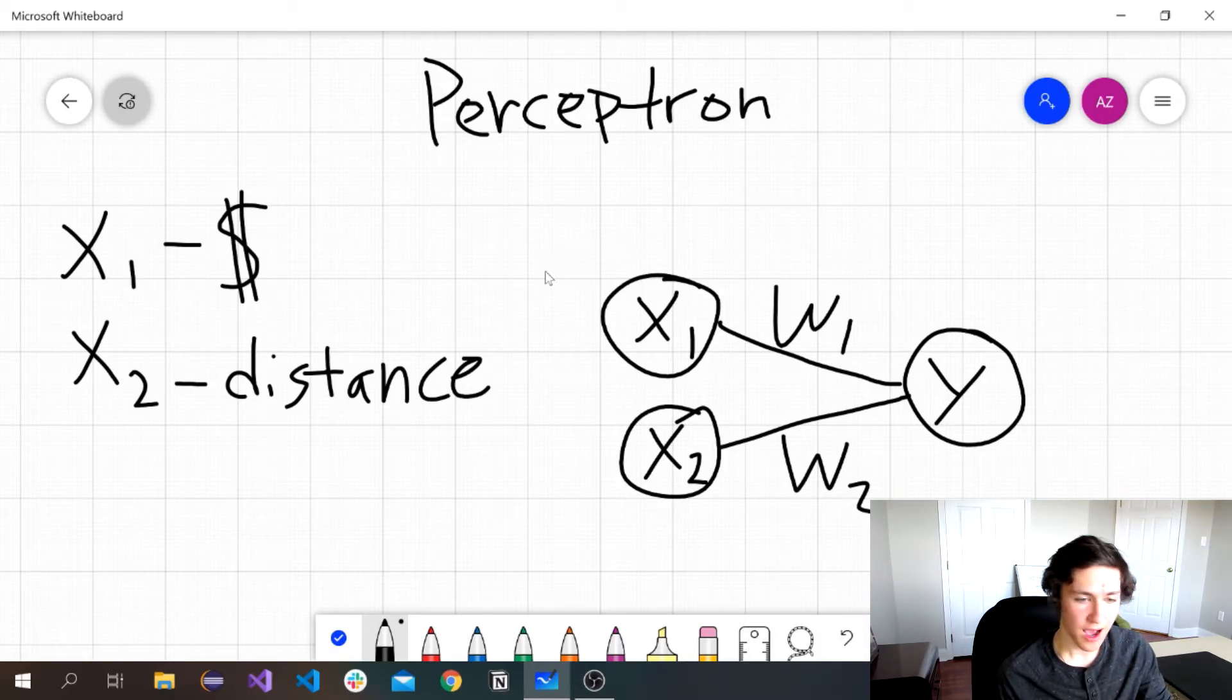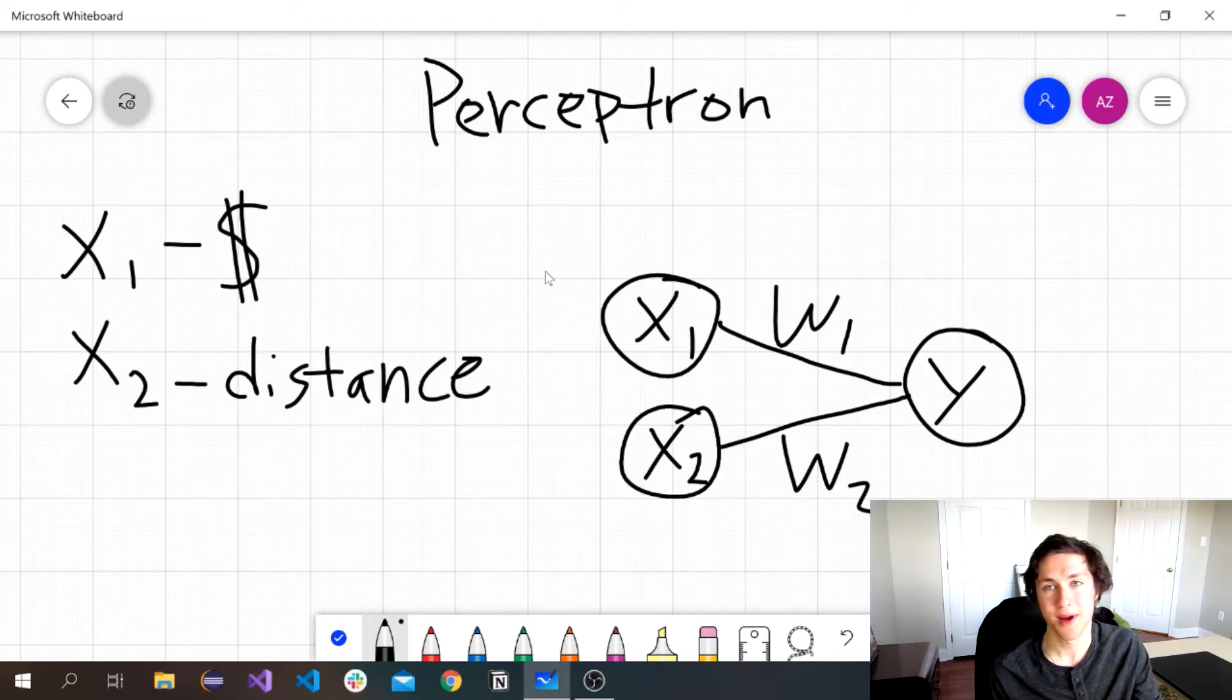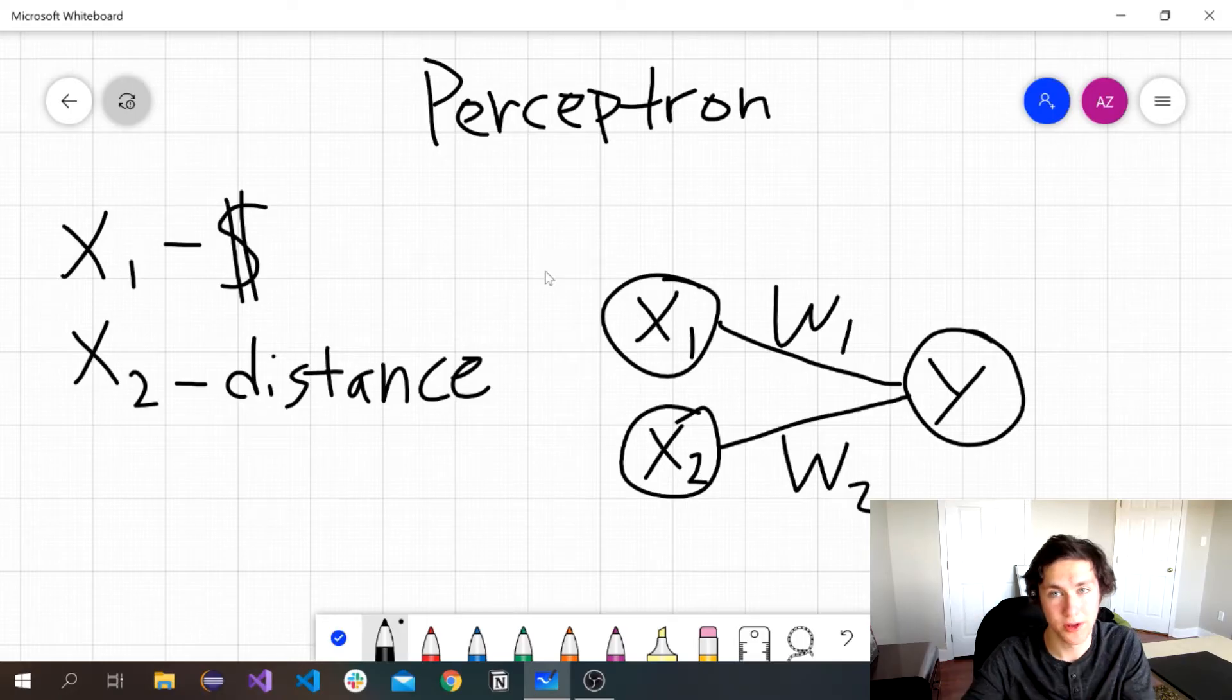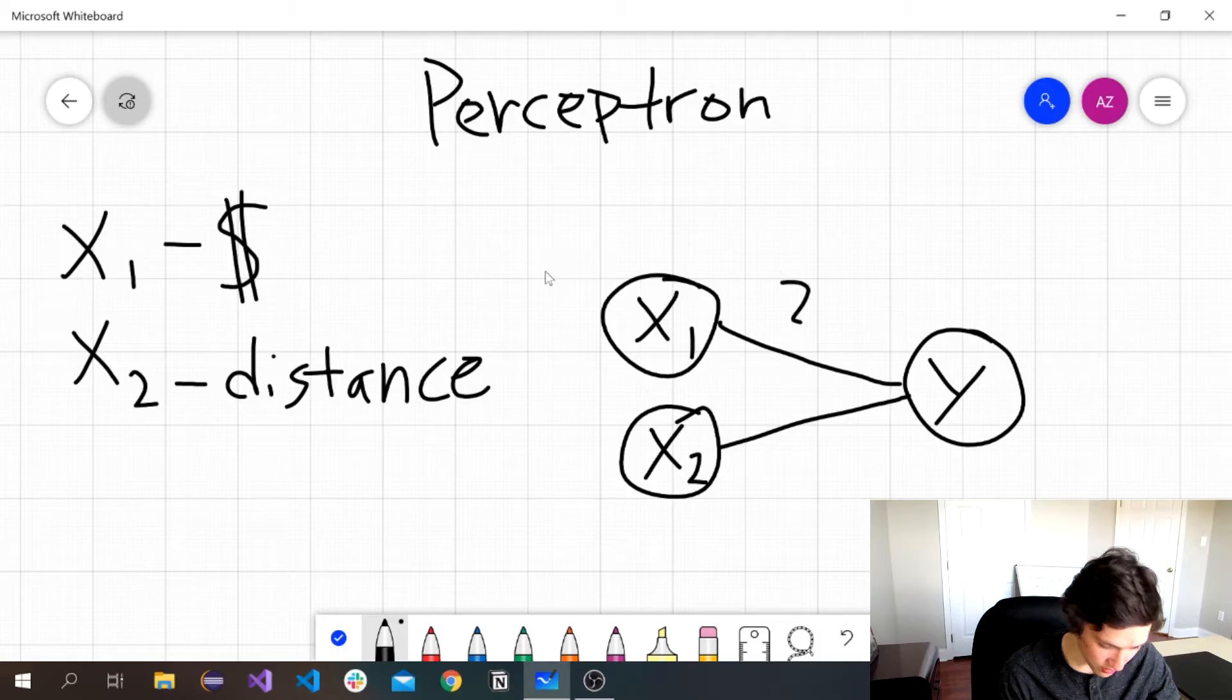So there's going to be a weight one here and a weight two here. So what are they? Well, I personally feel like having money is probably going to be more important than how far away it is, because if you don't have money, you're not getting a meal, but if it's far away, you can still get there. So what I'm going to do is set the first weight to two and set the second weight to one right there.